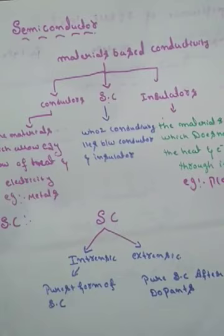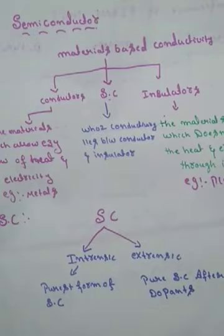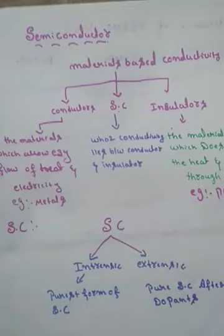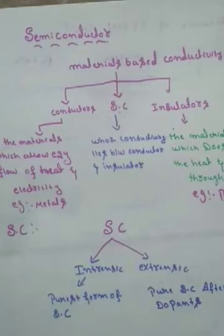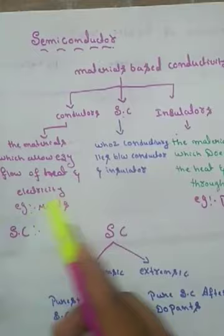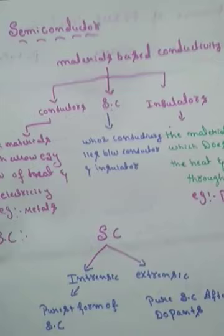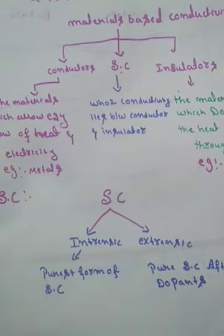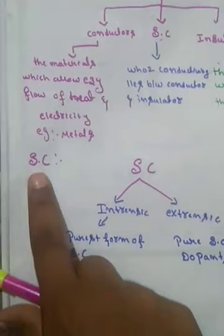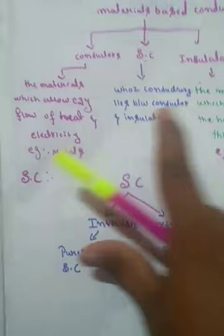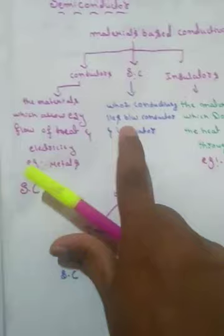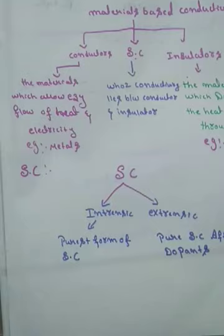Semiconductor materials, compared to conductors or insulators, can easily be manipulated by an external agency. That is why we prefer semiconductors over conductors and insulators — that is the main reason we use them. A semiconductor is a material whose conductivity lies between that of a conductor and an insulator. Such a material is called a semiconductor.